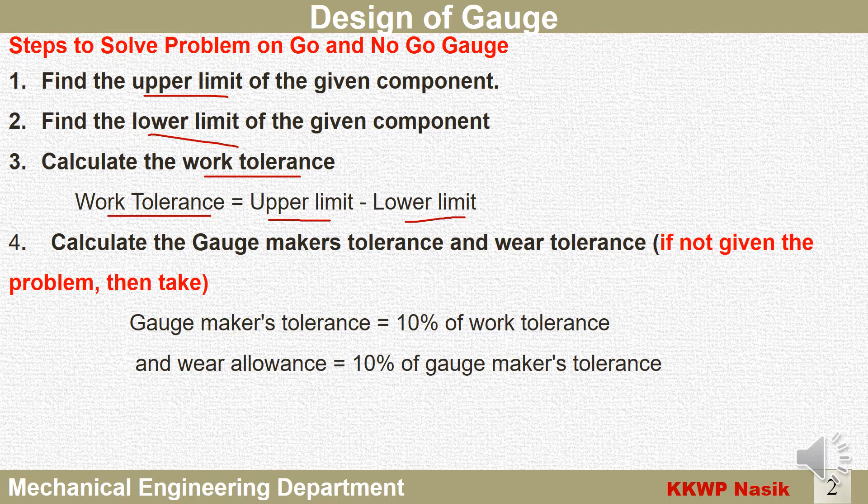The fourth step is calculate the gauge maker's tolerance and wear tolerance. If the tolerances are given in the problem, take those values; otherwise, calculate using the formula: gauge maker's tolerance equals 10 percent of work tolerance, and wear allowance equals 10 percent of gauge maker's tolerance.